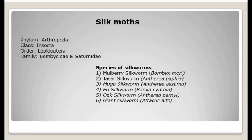Under Order Lepidoptera, these are beautiful insects whose entire body — including proboscis, head, thorax, abdomen, legs, and wings — is covered with small, beautifully colored scales. The silk moths belong to two families: Bombycidae and Saturniidae. Moths that produce silk belong to either family Bombycidae or family Saturniidae.